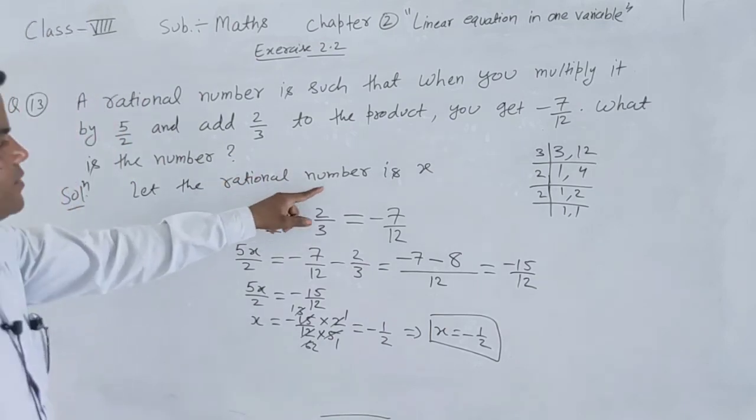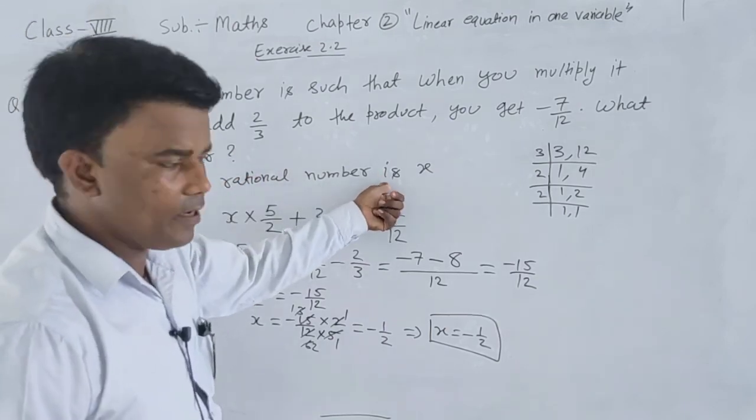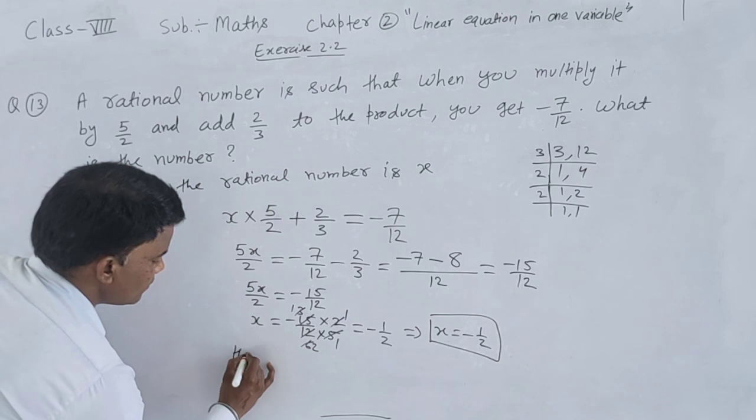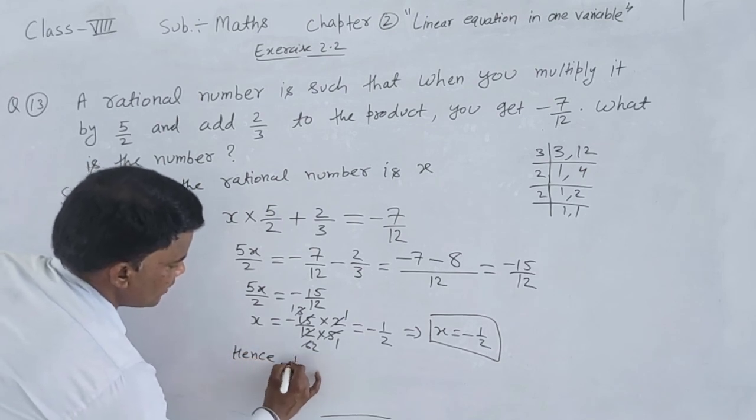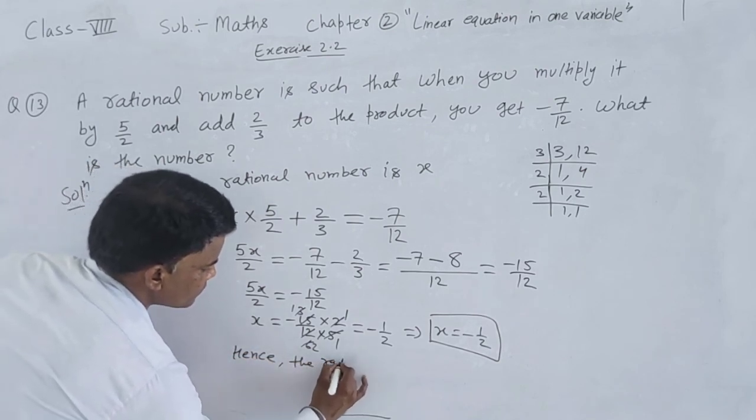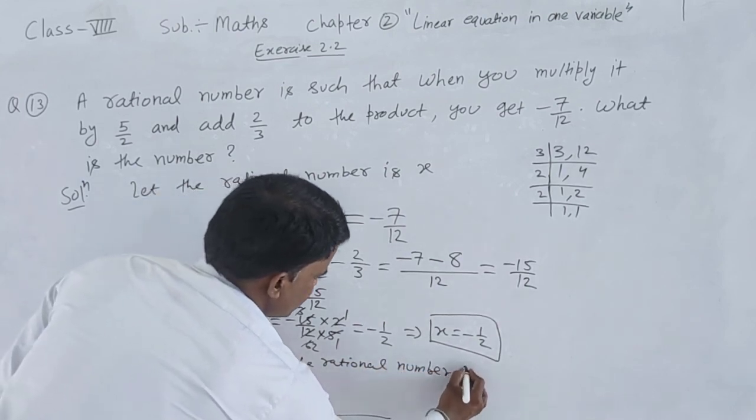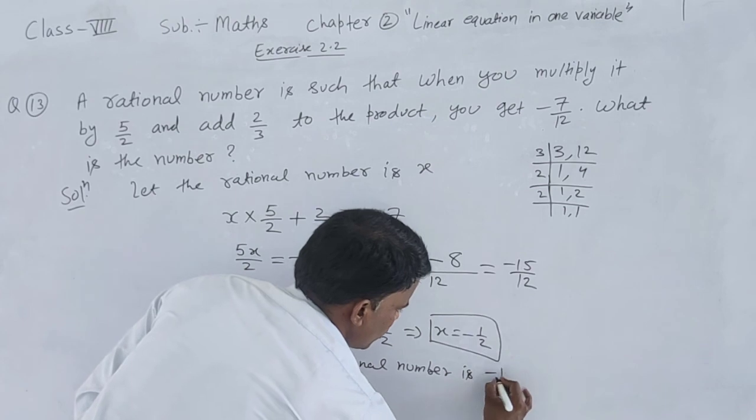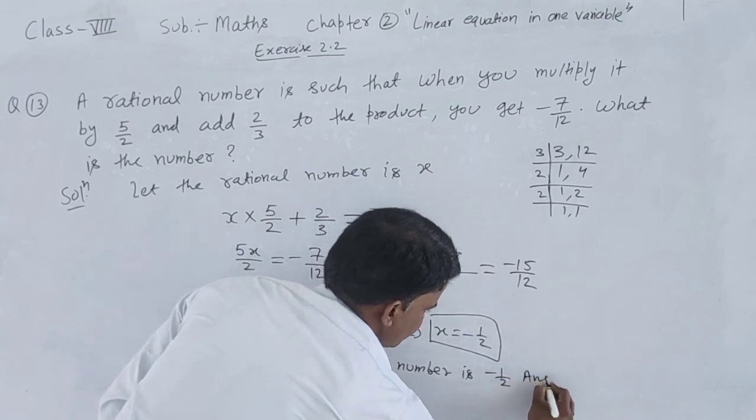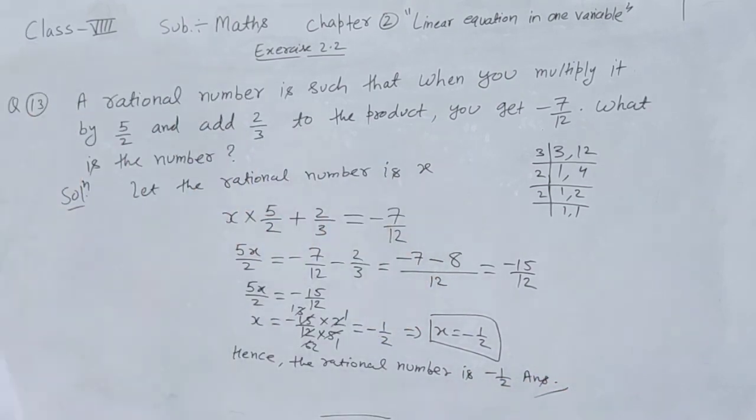Let the rational number. The rational number is, hence, the rational number is minus 1 upon 2. Thank you.